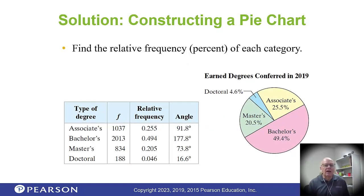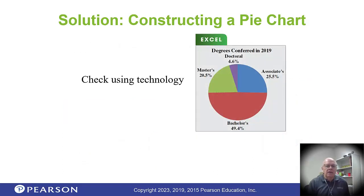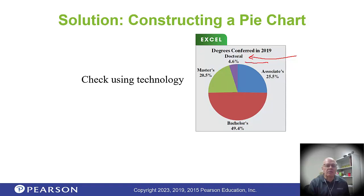Here's our pie chart — looks pretty nice. To be honest, you probably won't do this manually very often. Most likely you'll use Excel or some statistical program. When you use technology, not only can you put the category names there but you can also show the percentages, so you've got a number of things to look at all at once.